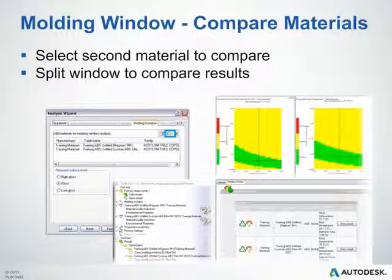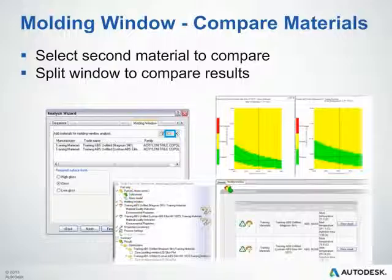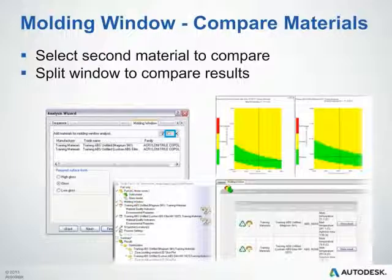Once you have your material selected, run the analysis and you can see a comparison in the summary pane between the two materials — the two optimum conditions — as well as results and 2D slice plots for each material. From there, you can do a simple split or tile to look at both analyses side by side. For example, if you're looking at two grades of ABS — a high flow and a low flow — you can see if one has a smaller processing window over the other, helping you make your decision.